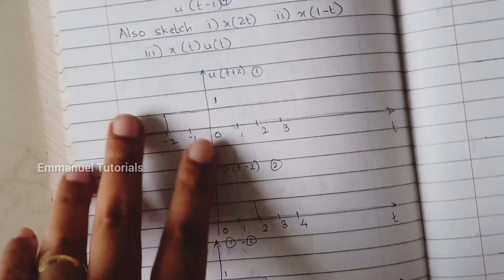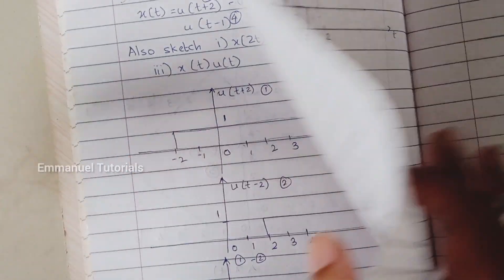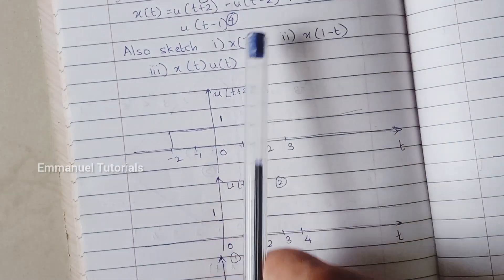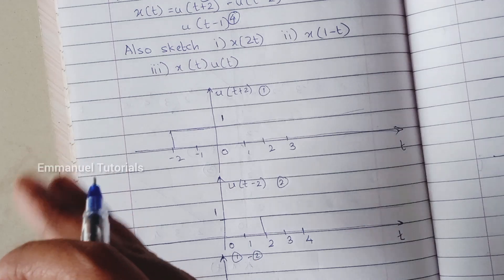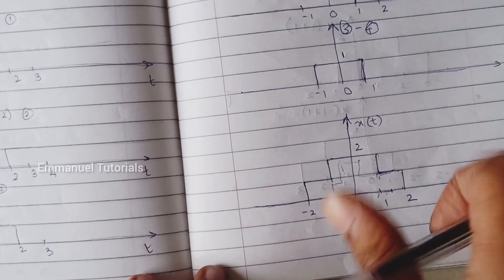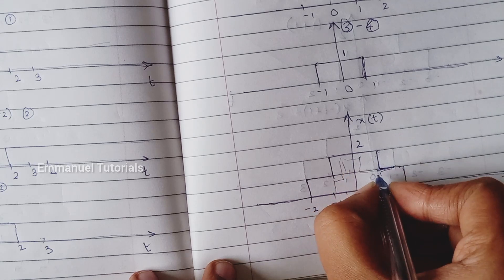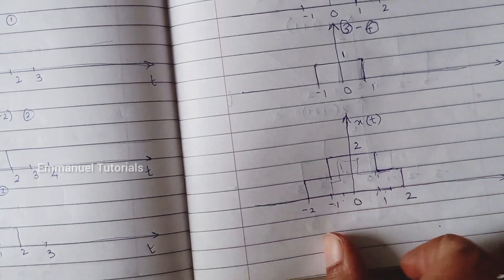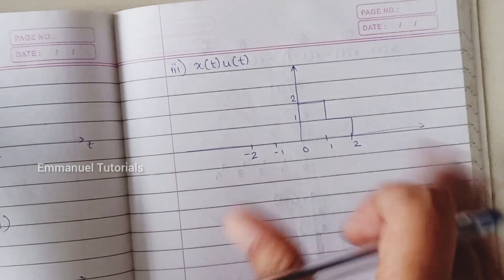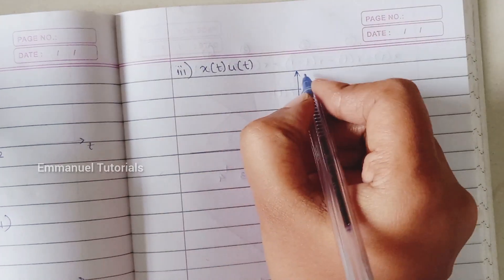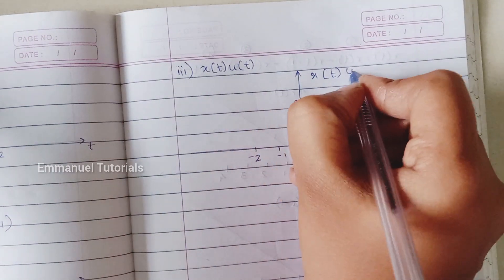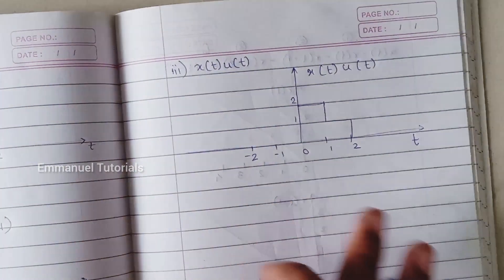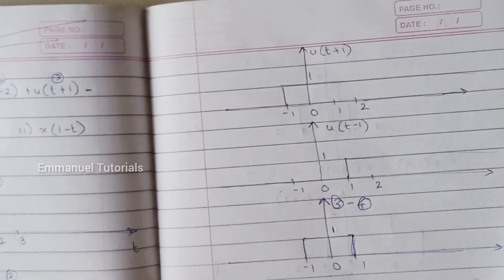The third derived signal is x(t)·u(t), which is very simple. As mentioned in previous videos, when you multiply any signal by u(t), you just cut off the left-hand part and keep only the right-hand part. Here the right-hand part of x(t) is only the portion for t ≥ 0: a step from 2 down to 1 at t=1, then down to 0 at t=2. That is what has been drawn — the left-hand side of the signal disappears. This is our x(t)·u(t).